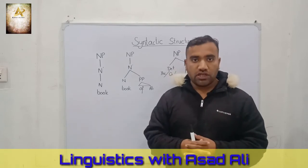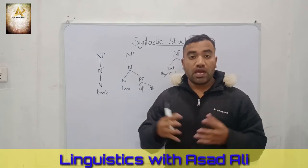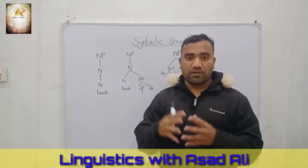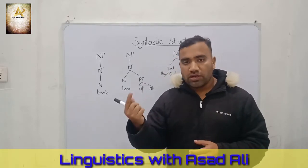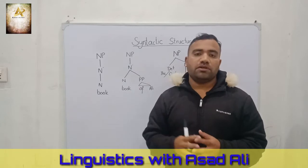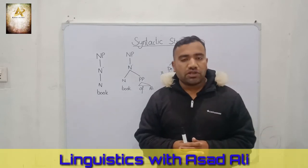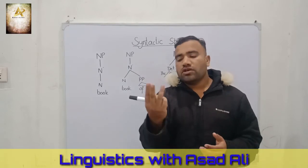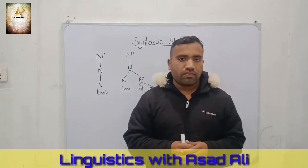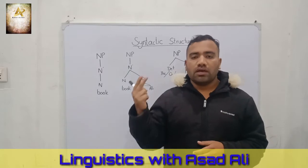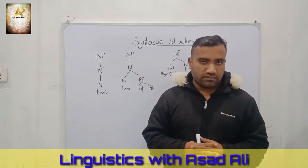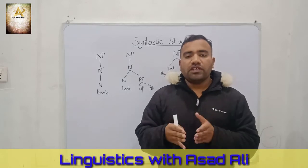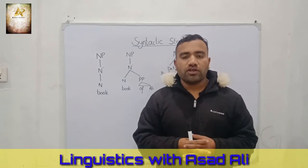The second structure is the same. Examples include: 'a book,' 'the book,' 'an elephant,' 'an apple.' We have a determiner. In traditional English grammar, we have three types of determiners: 'a,' 'an,' and 'the.' These are the determiners.